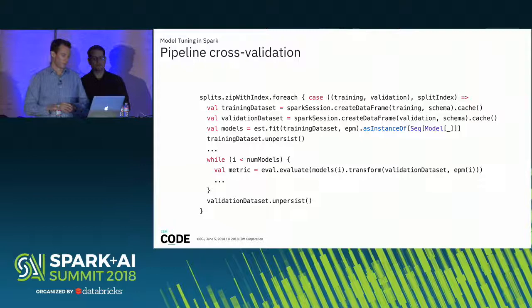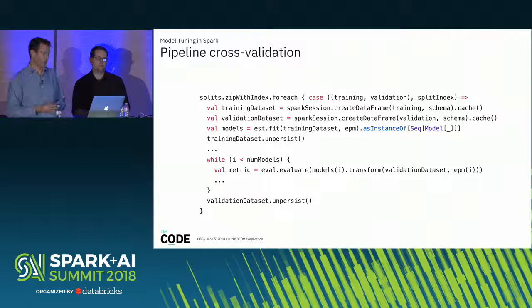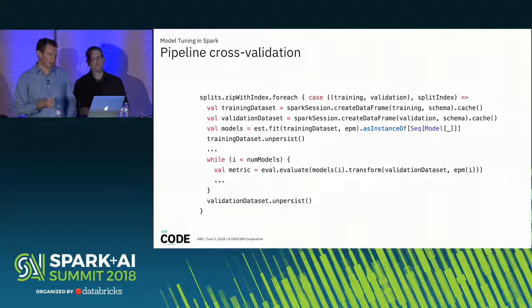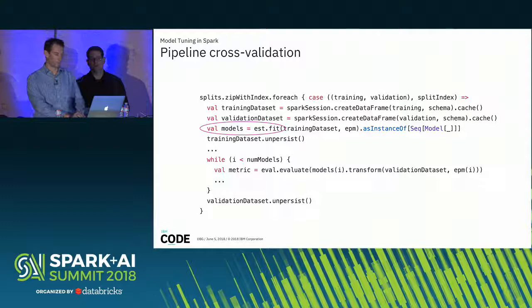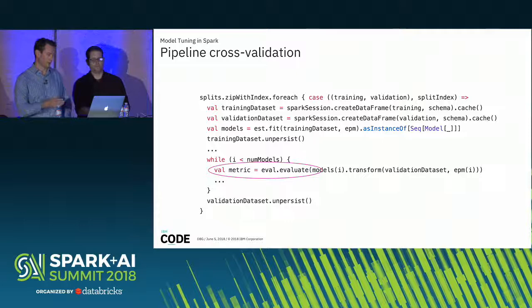Under the hood, this is what the core code looks like for k-fold cross-validation. First, we split the data into k folds — maybe five folds in a typical case. For each fold, we have a training dataset (about 80% of the data) and a validation set (about 20%). For each split, we fit the estimator — the entire pipeline — with each set of parameter maps the ParamGridBuilder has created. Once we have a sequence of models, we evaluate each one on the validation dataset, record the metric, and at the end average the metric across all folds to select the best model.